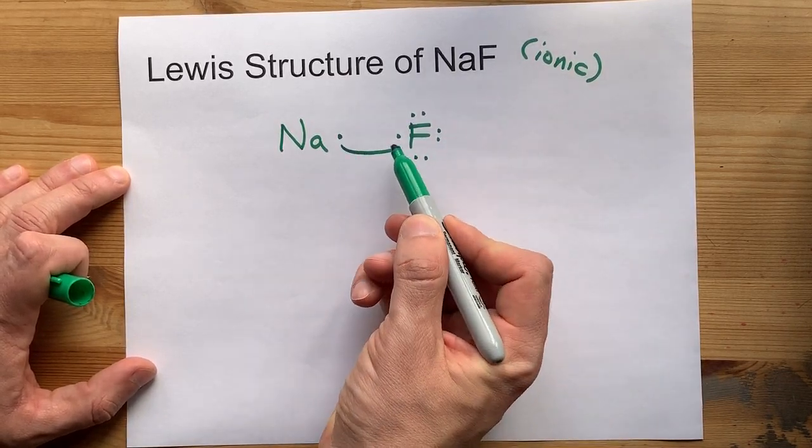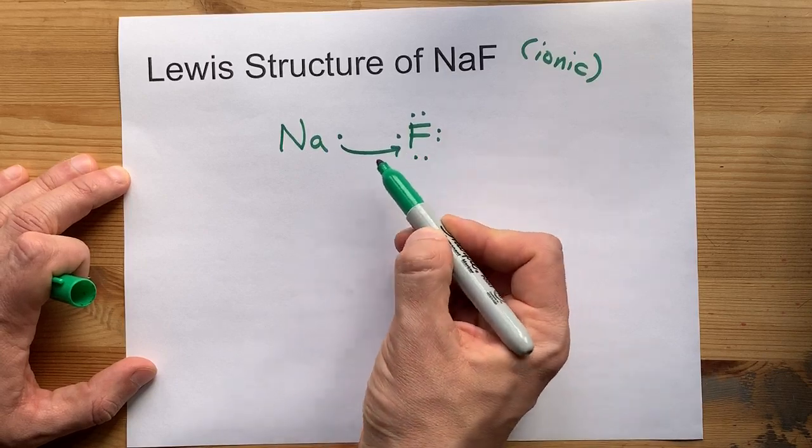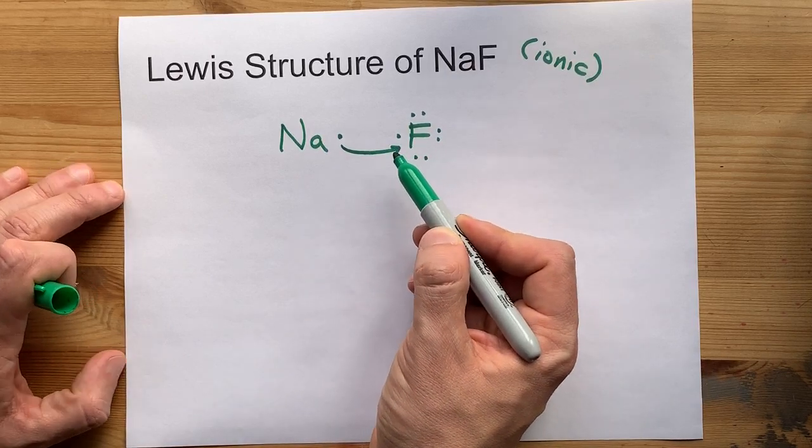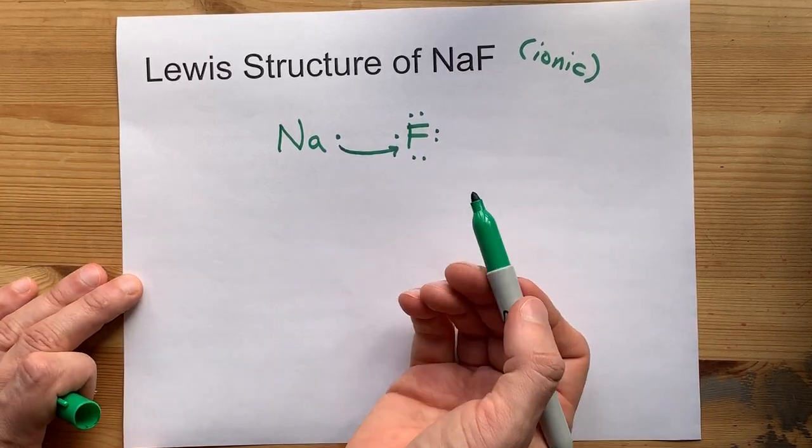The metal has given up its electrons. The non-metal has accepted electrons, and they both get together to form ions.